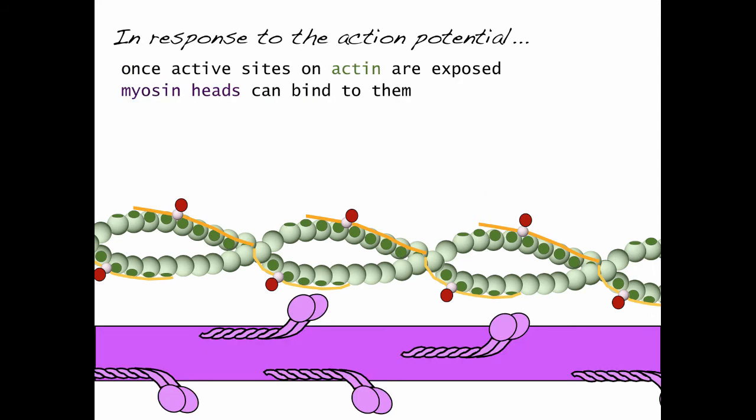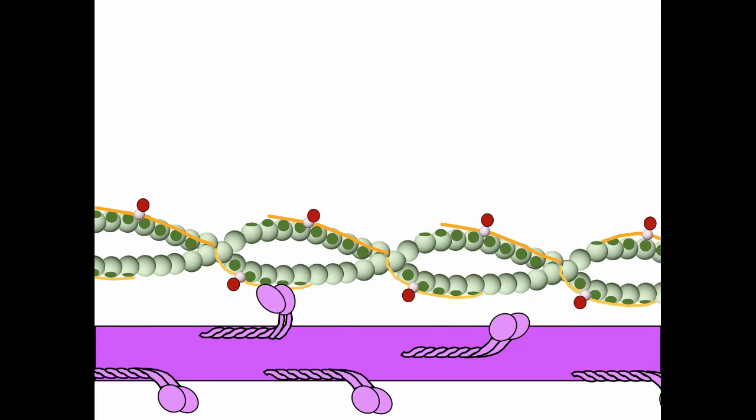Once the active sites on actin are exposed, myosin heads can bind to them, and we call this a crossbridge. After the crossbridge has formed, the myosin head can pivot and pull actin towards the center of the sarcomere. We call this a power stroke. Once the power stroke has occurred, the myosin head can detach and reset to be able to bind again.